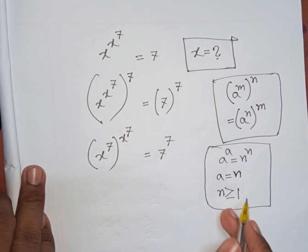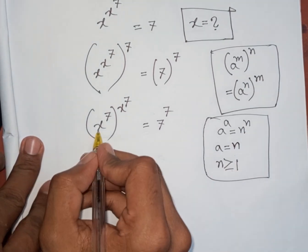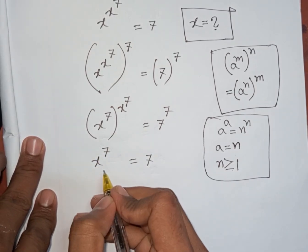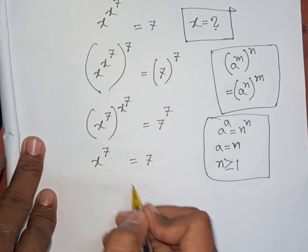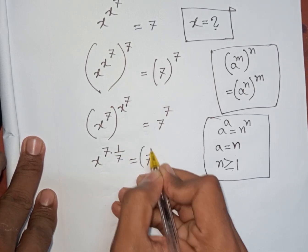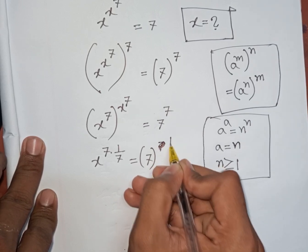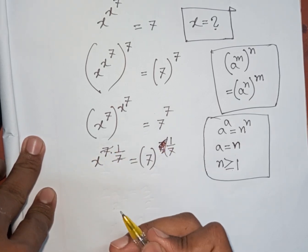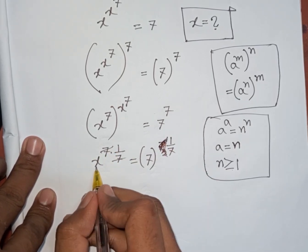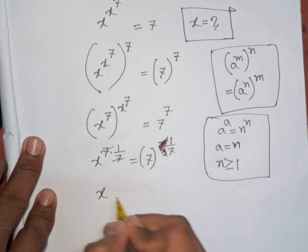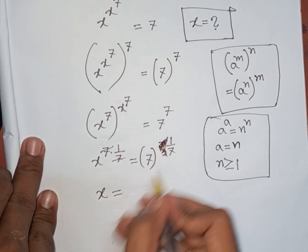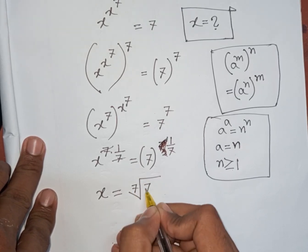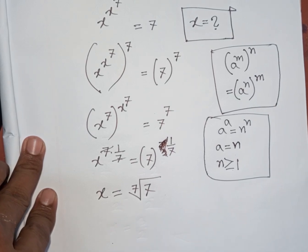According to this rule, x to the power 7 equals 7. To find x, we raise both sides to the power of 1 over 7. The 7 cancels, giving x to the power 1 equals 7 to the power 1 over 7, which can be written as the 7th root of 7. So x equals the 7th root of 7.